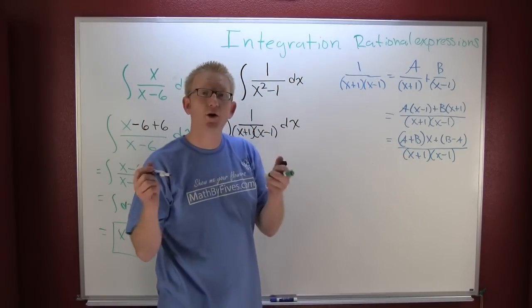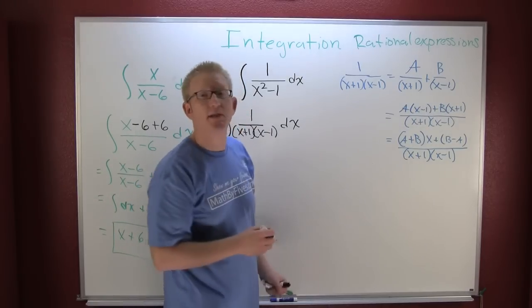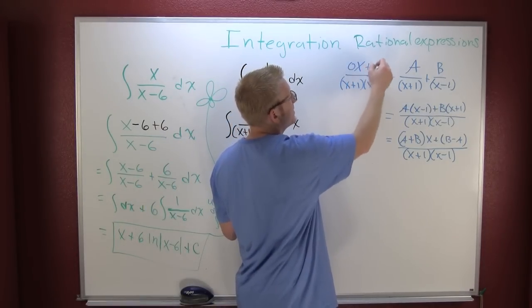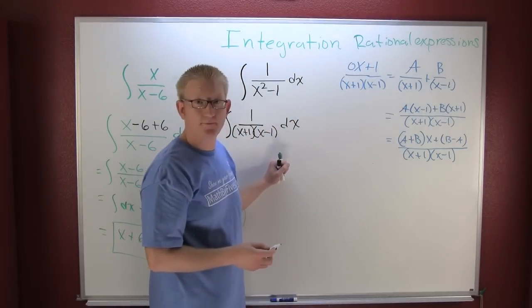For these two fractions to be equal, the coefficients on their terms have to be equal. So here we see zero times x plus one. That was my original.